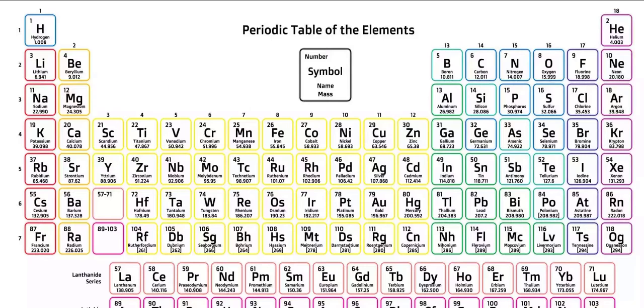Now let's look at sodium, the first element of the third row. It's abbreviated Na on the table because it comes from the Latin word for sodium, which is natrium.